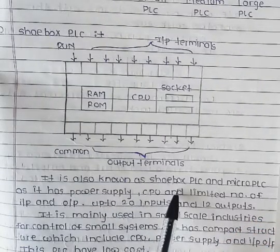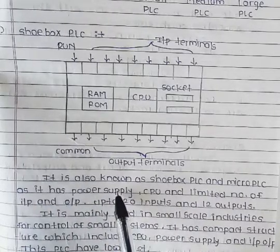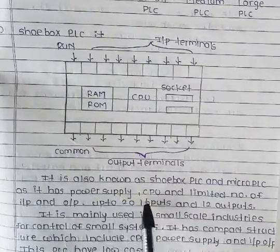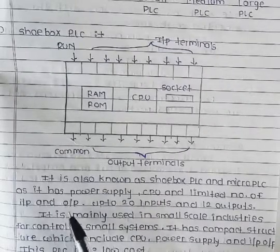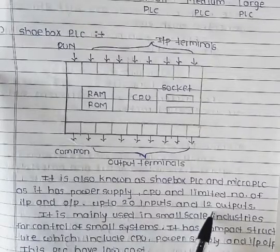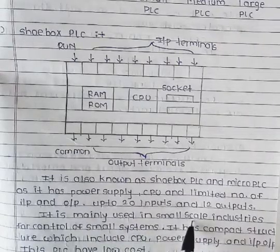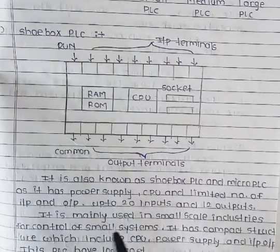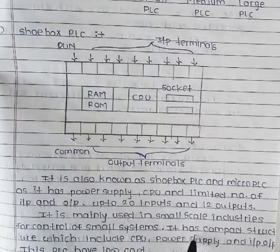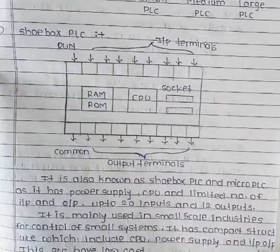It is also known as the shoebox PLC and micro PLC. It has a power supply, CPU, and a limited number of inputs and outputs — up to 20 inputs and 12 outputs. It is mainly used in small scale industries. It has a compact structure which includes the CPU, power supply, input and output.